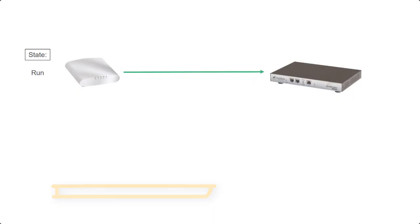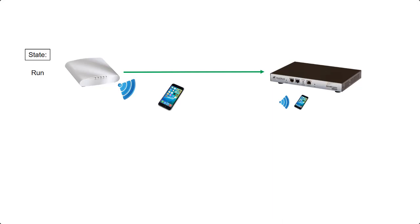With a standard WLAN, we create the WLAN on the controller and it's deployed to the access point. A client comes along and associates to the access point, and that client's details are registered at the controller. If there's a pre-shared key set on the WLAN, the key will be negotiated and details of the key will be stored on the Zone Director. That's a standard WLAN operating normally.